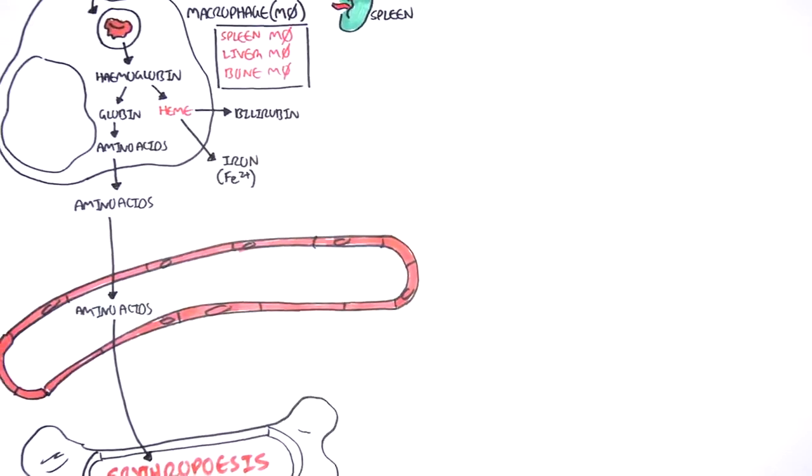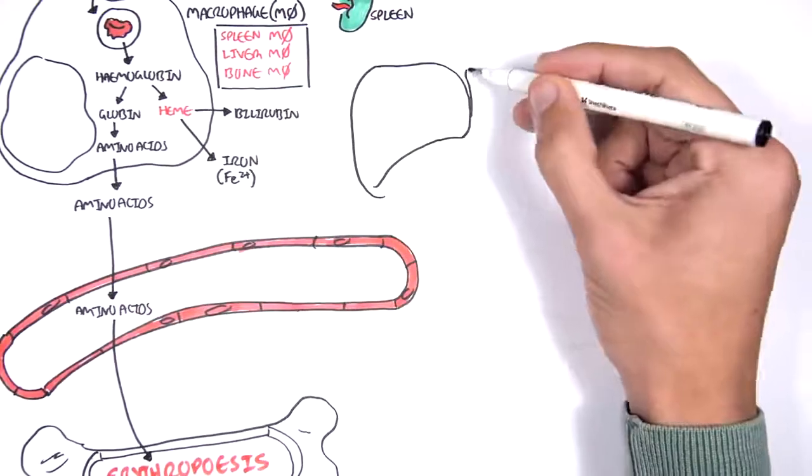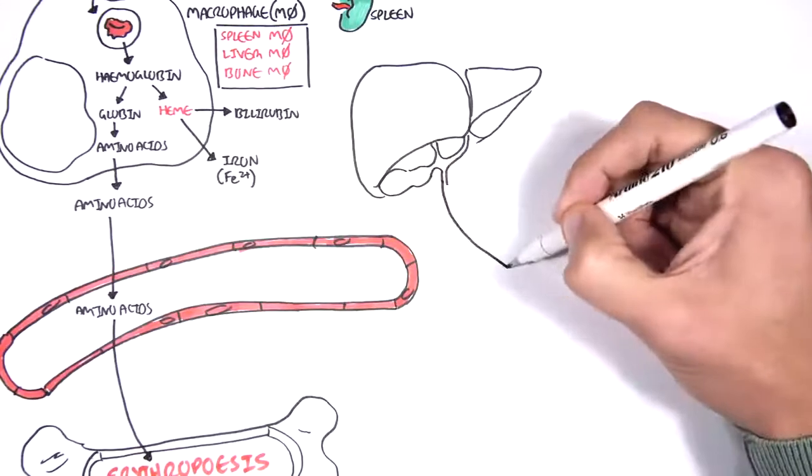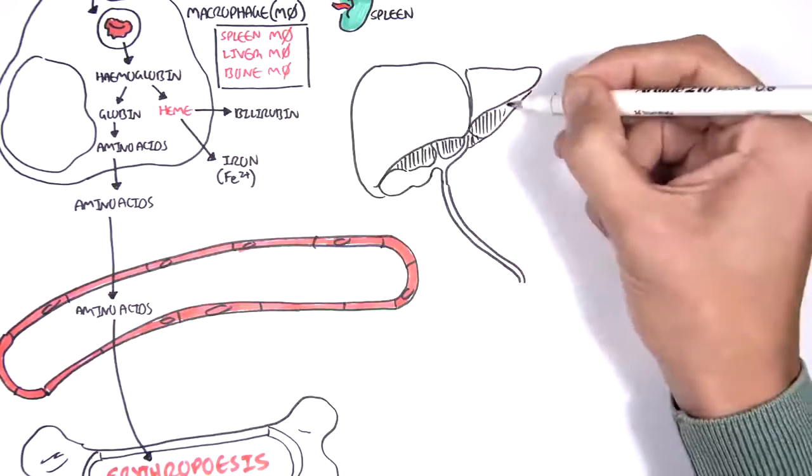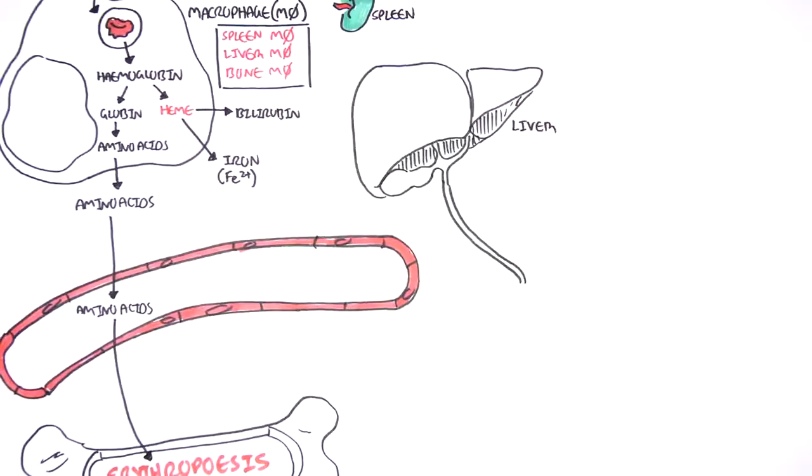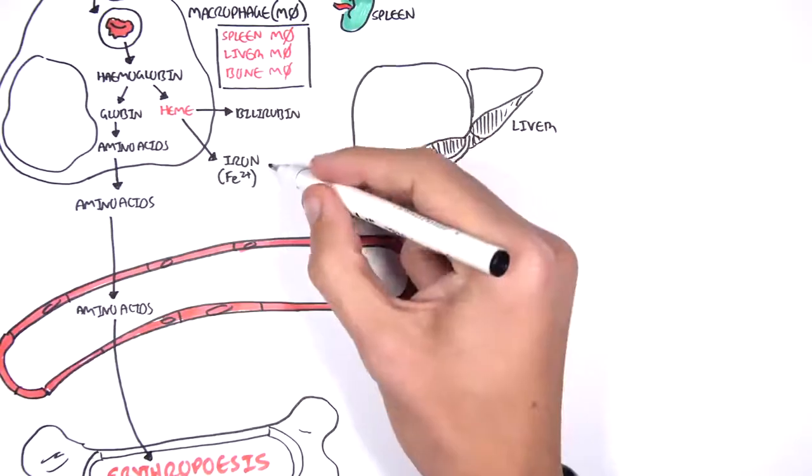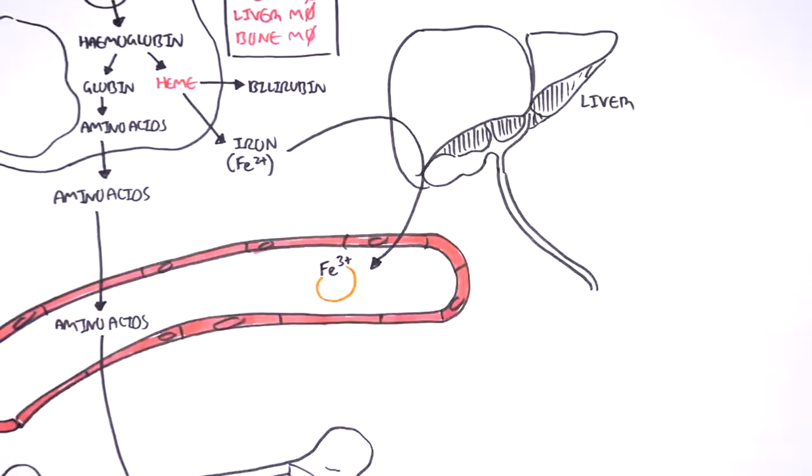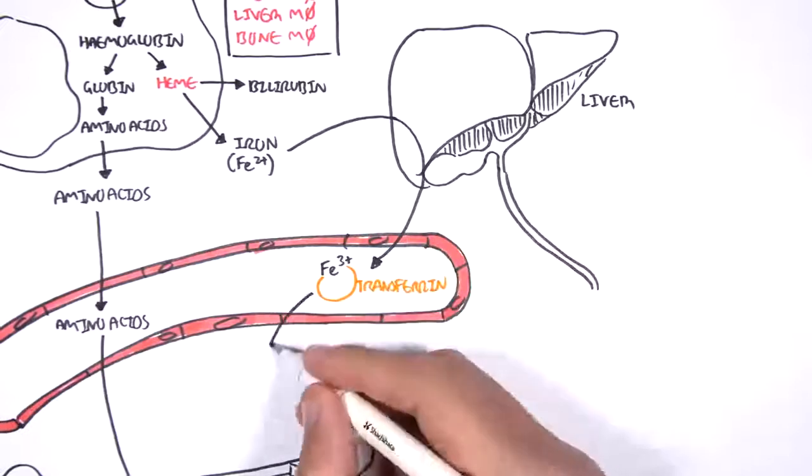The iron and bilirubin also have similar fates. So, the iron, it can't actually travel in the blood just like that. It has to be attached to a transporter. And so, iron obtains an iron transporter from the liver known as transferrin. And it's this way how iron makes its way back to the bone marrow for erythropoiesis.